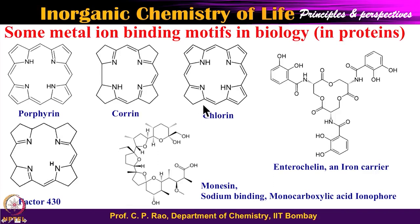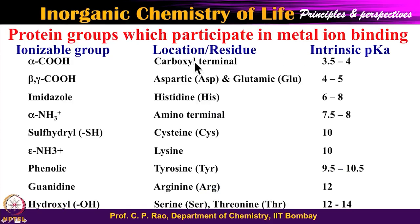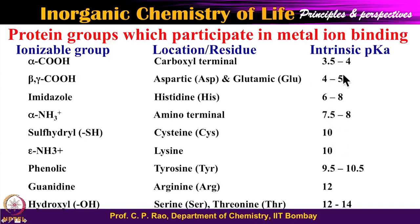What we have seen is that all those side chains shown previously are capable of binding to metal ions and are therefore called ligating centers, forming coordination situations. Aspartic, glutamic, histidine, cysteine, lysine, tyrosine, arginine, and hydroxyl groups from serine and threonine can all bind — but not at the same pKa. They require different pKa levels. In proteins, different pockets will have different pKa environments, and you can expect the appropriate side chains to bind to the metal center.